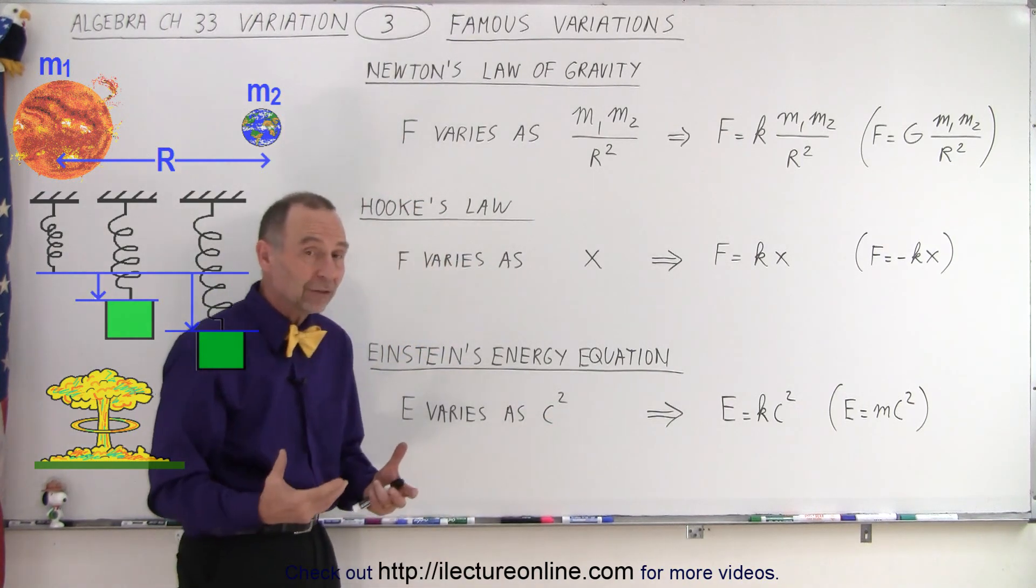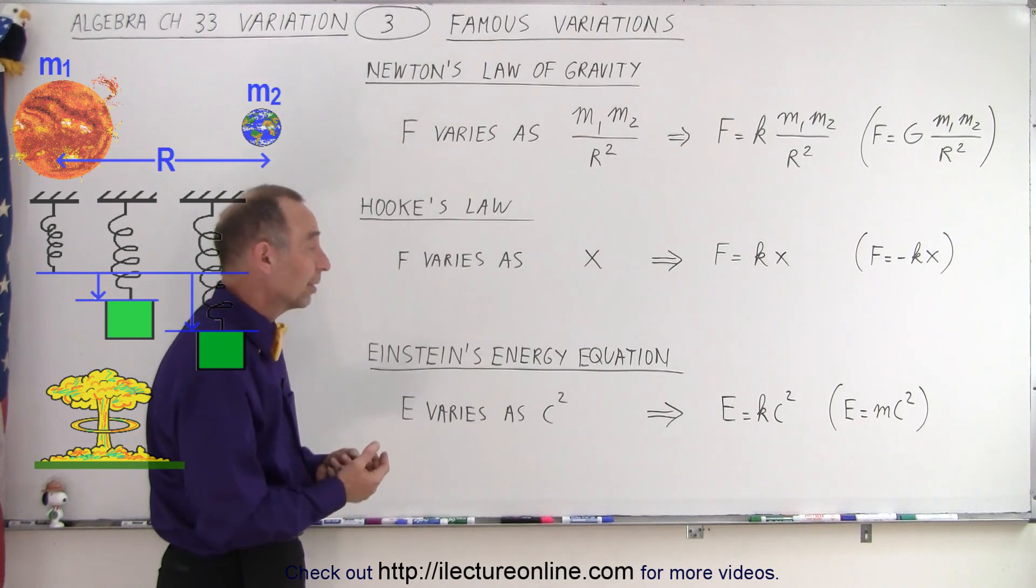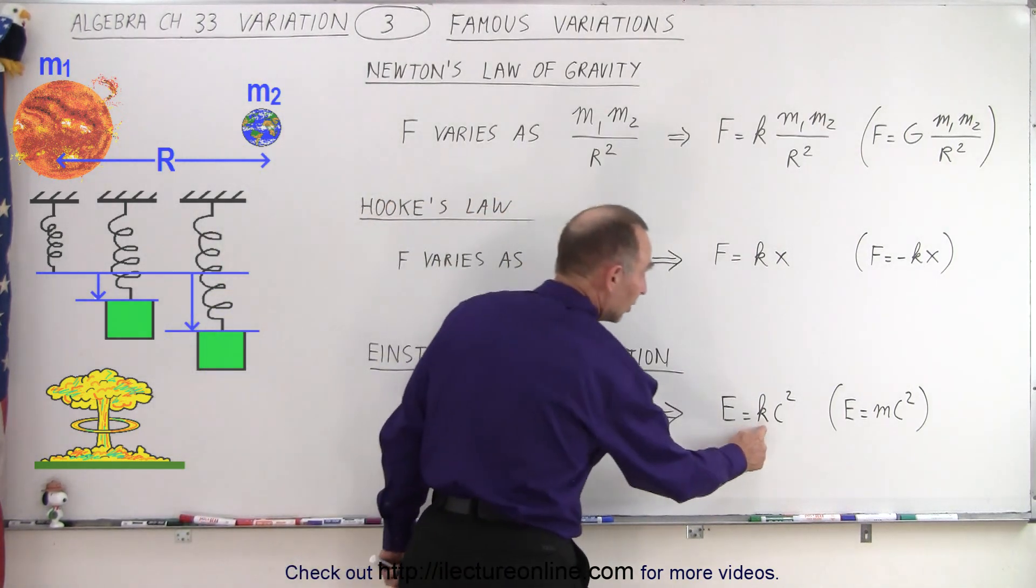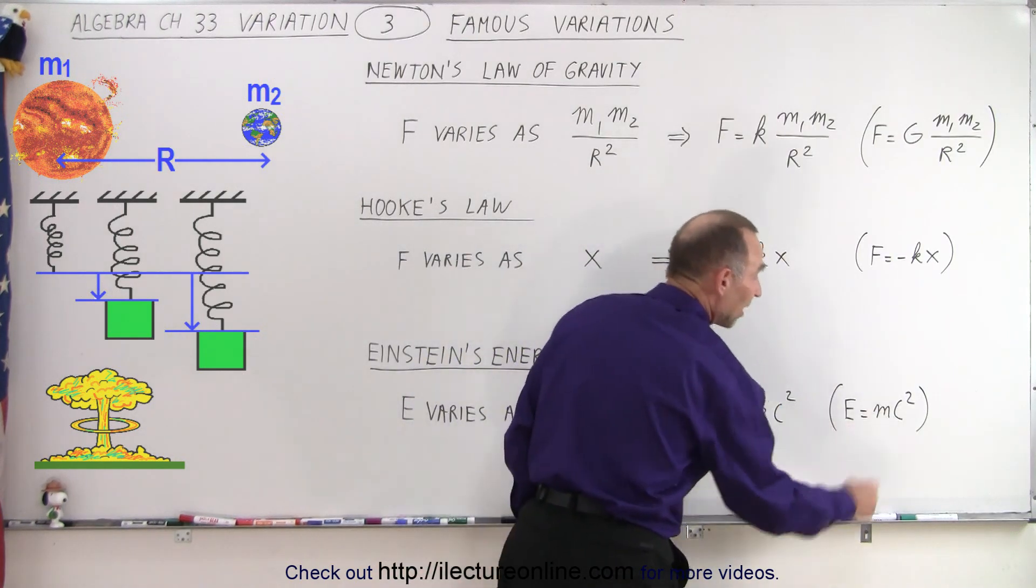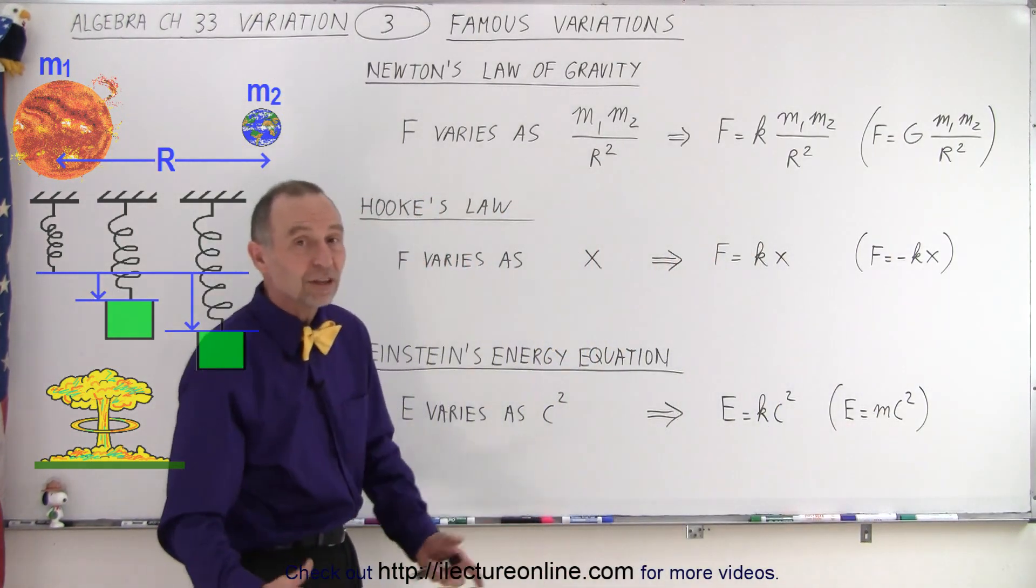C stands for the speed of light, so it varies as the speed of light squared. So he needed a constant in there, E equals K times C squared. And of course, in this case, the constant is the mass of the object, E equals mc squared.